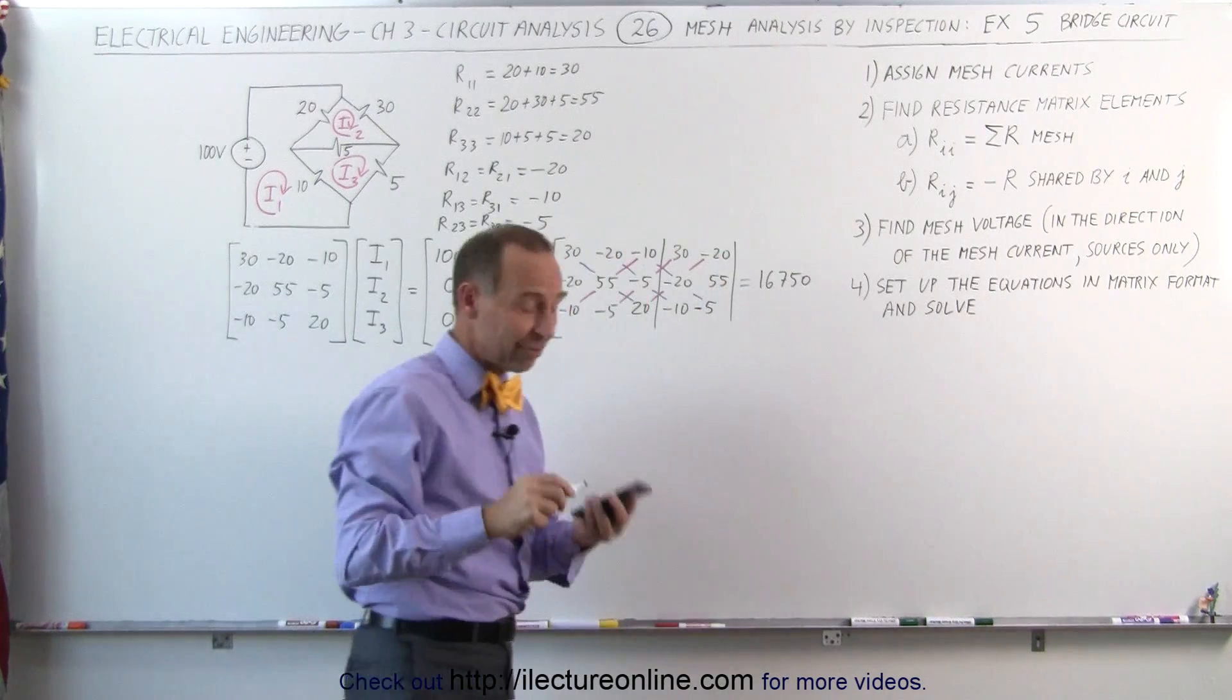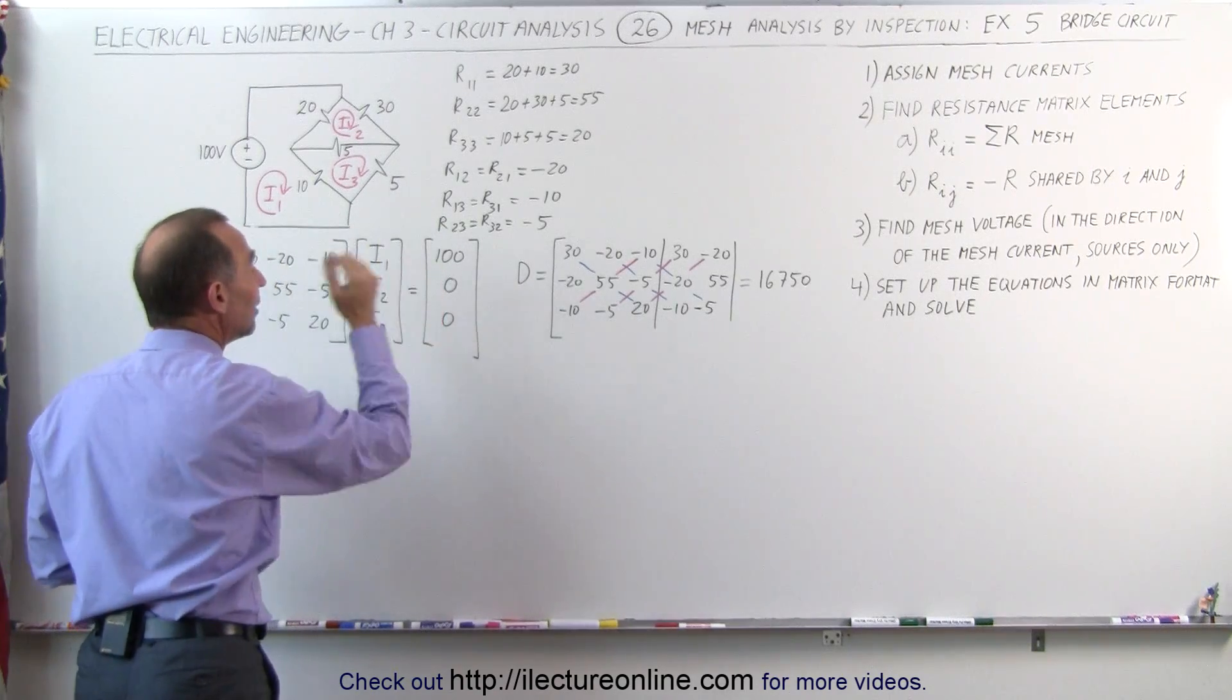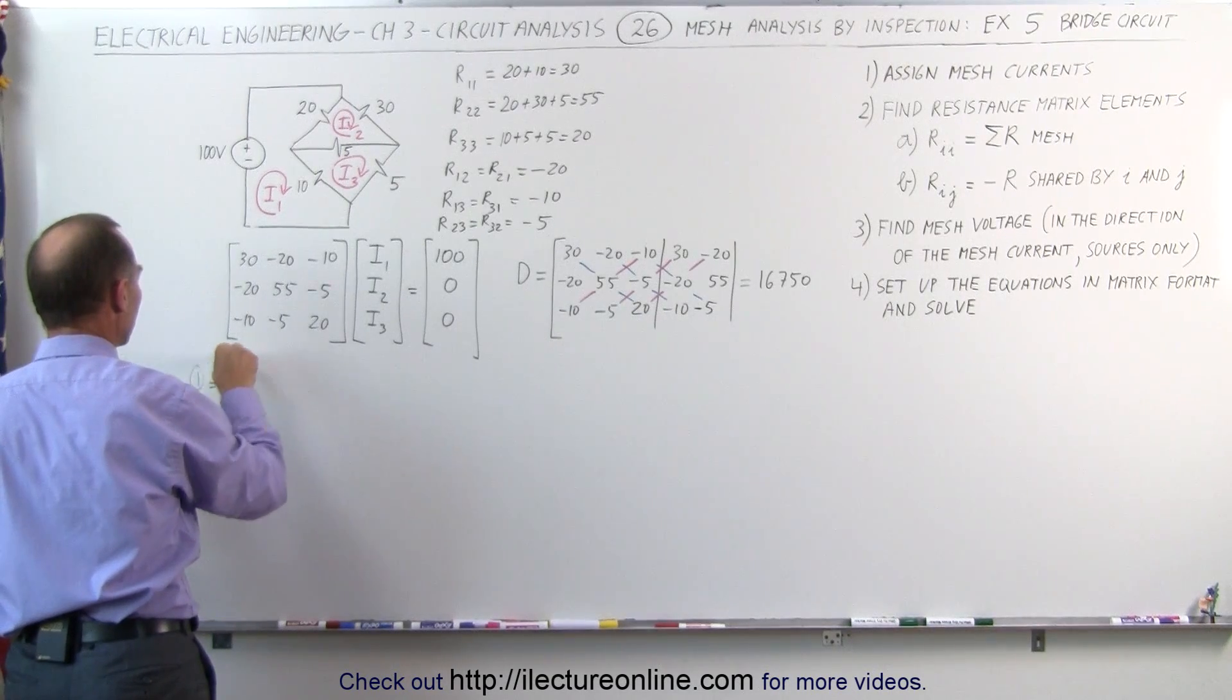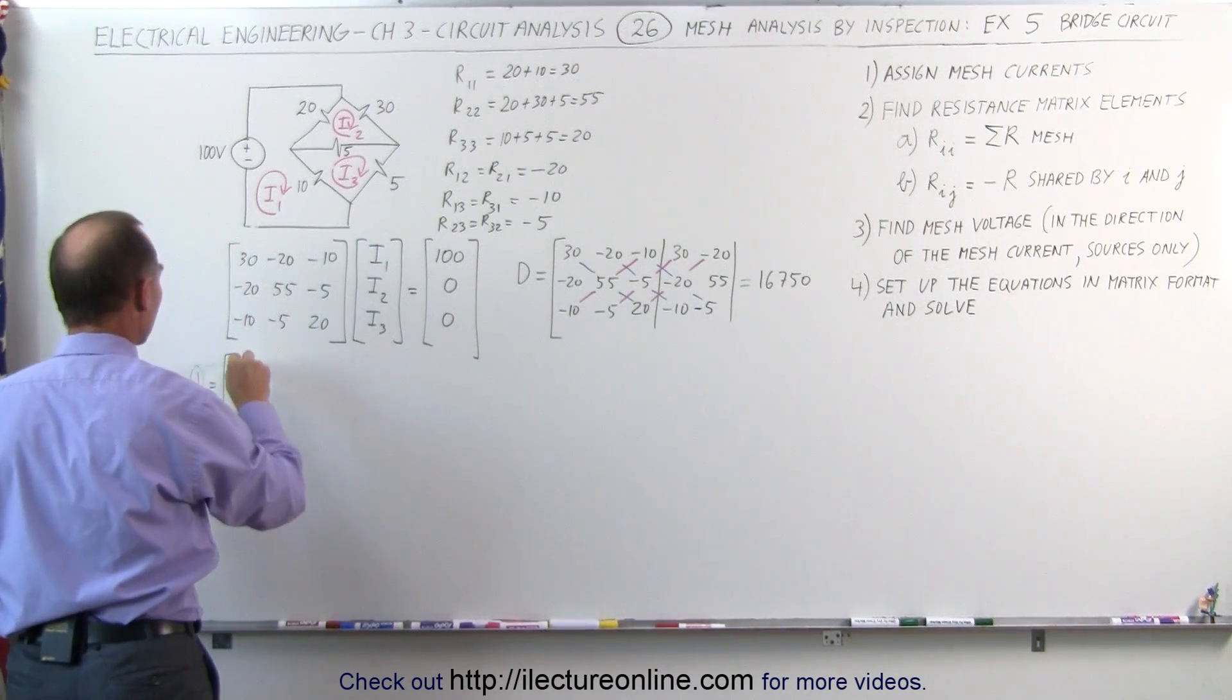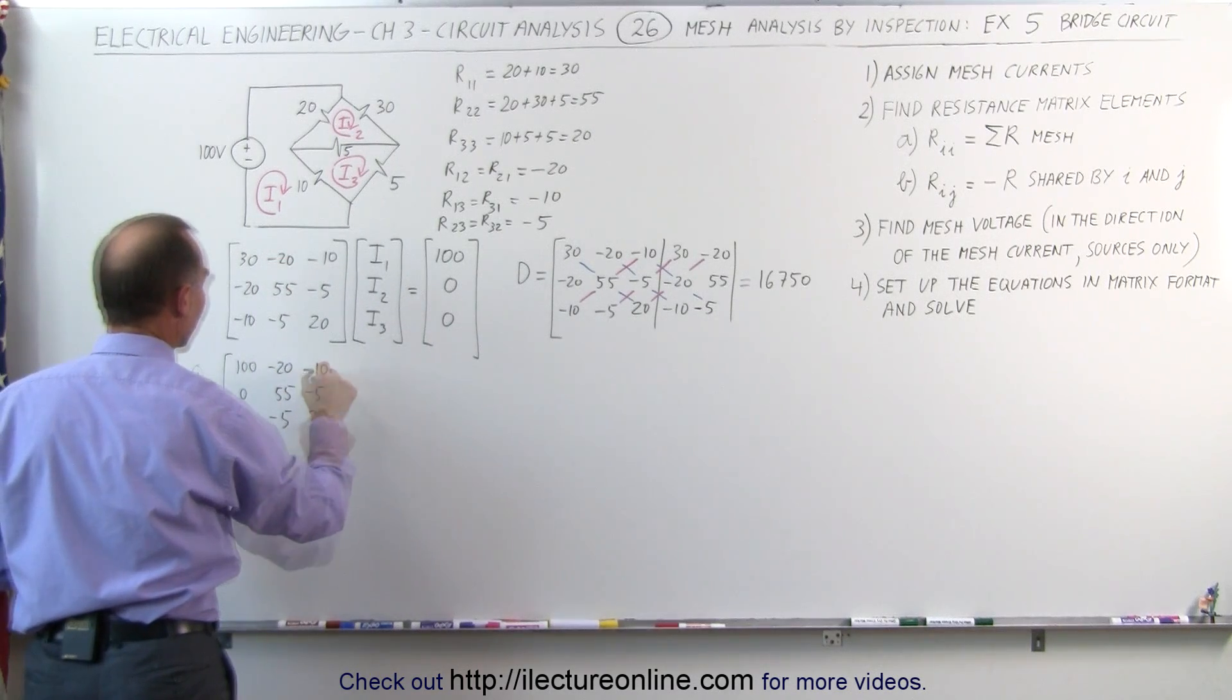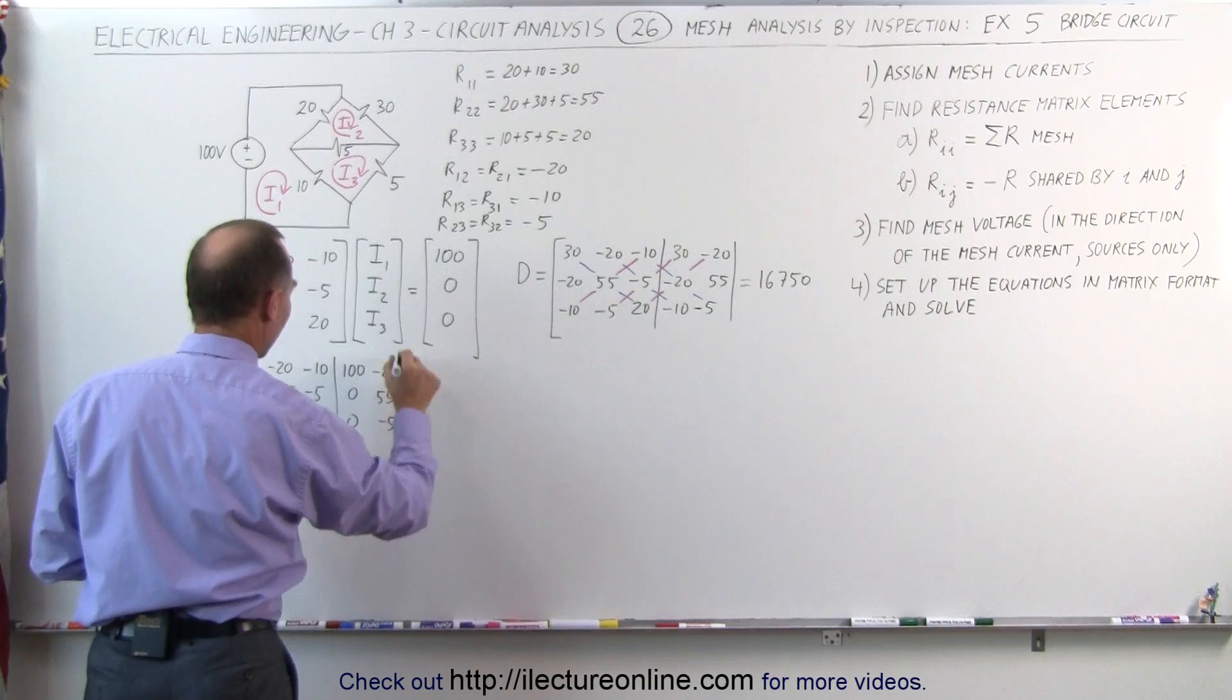Now we need to find the three matrices that belong to I1, I2, and I3. I want to replace the column with the voltages. To find the first matrix, this is equal to, I repeat this matrix, but I replace this column by the voltages. I get 100, 0, and 0, I keep the other numbers, 55, minus 5, minus 10, and then I repeat those two columns again, 100, 0, minus 20, and minus 5.